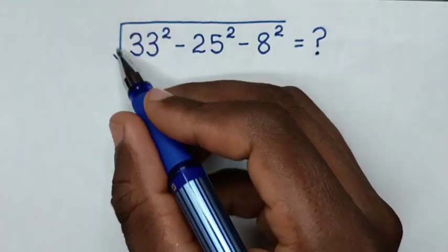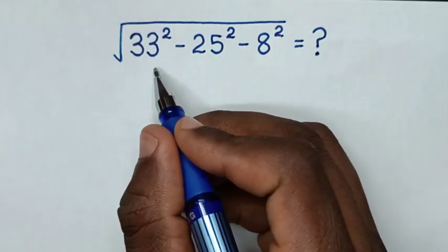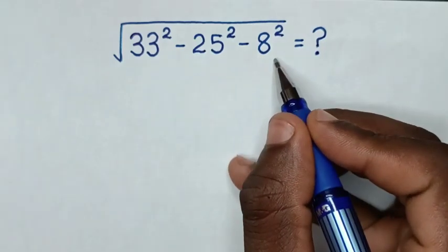Hello! How to solve square root of 33 square minus 25 square minus 8 square?